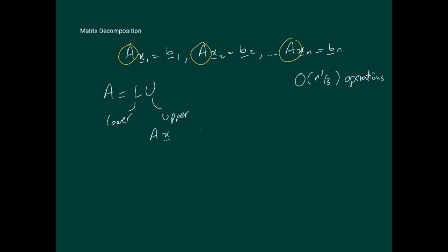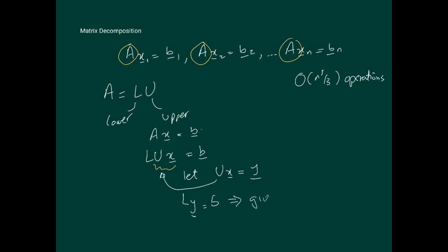The idea works like this. If you're trying to solve any system Ax equals B, then A is replaced by LU. So then LUx equals B. You take this and say: let Ux equal some Y. Substituting back, you end up with LY equals B. Since we know L and we know B, we can solve this to get Y. We take Y, plug it back in, and calculate X.